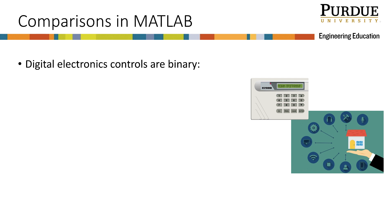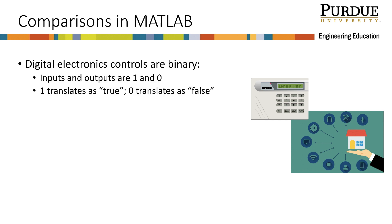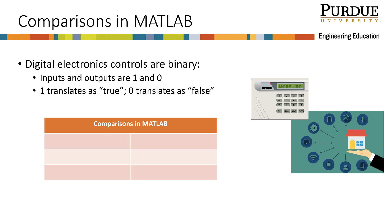First, we need to consider the system the clock will operate within. Digital electronics controls use binary numbering systems, meaning they take inputs of 1 and 0, which usually translate to true and false, and they output 1 or 0. In programming, comparison or relational operators are used to ask questions that can be answered with yes or no, or more commonly true-false. In MATLAB, all non-zero values are considered to be true but are typically represented by the number 1. All zero values are considered to be false and are represented by the number 0.